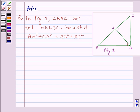Hello and welcome to the session. The question says in figure 1 angle BAC is 90 degrees. Also AD is perpendicular on BC. We have to prove that AB square plus CD square is equal to BD square plus AC square.